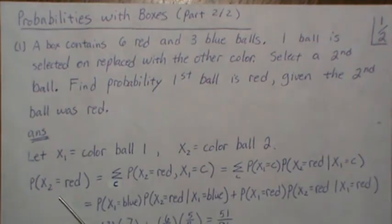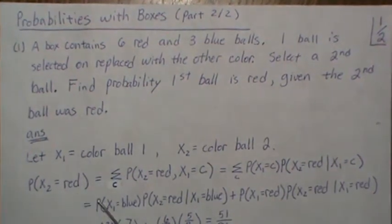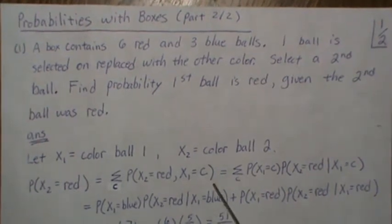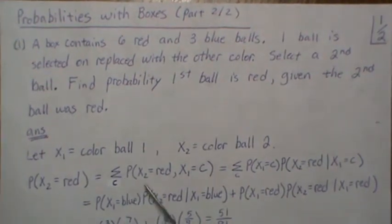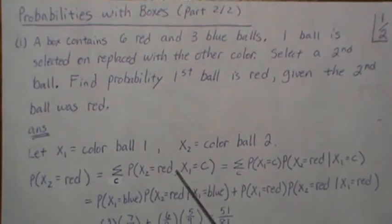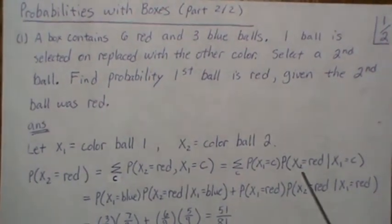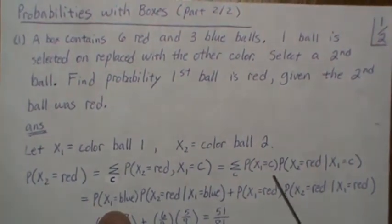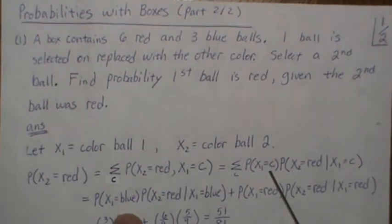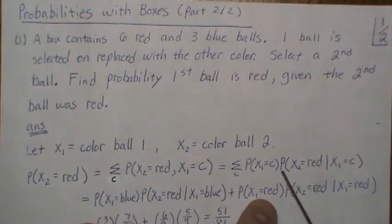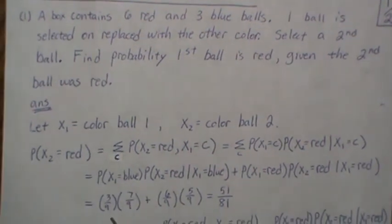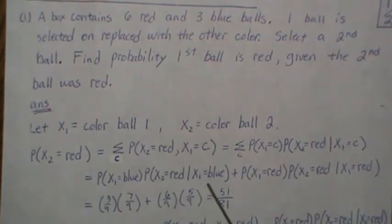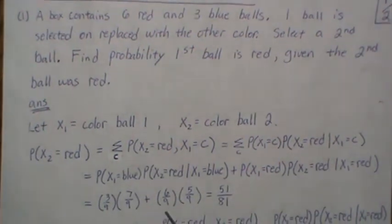We'll need the probability that the second ball is red in our calculation. I introduce another variable and sum over all possibilities — in this case red and blue. This intersection can be written in conditional probability form. So we do blue first and then red. The probability that X1 is blue is 3/9, and the probability that X2 is red given that the first one was blue is 7/9.